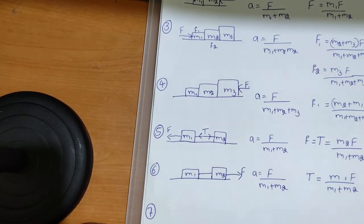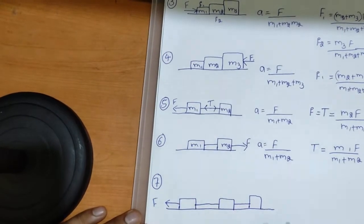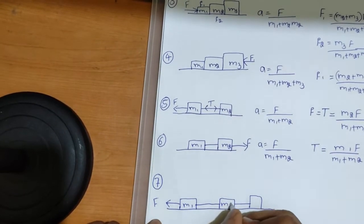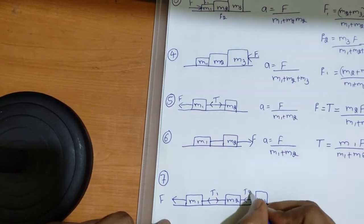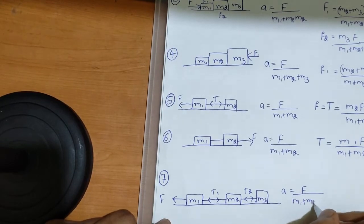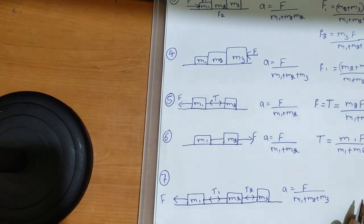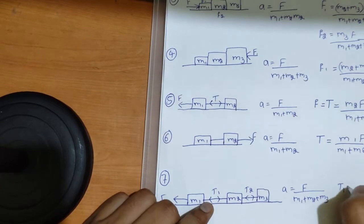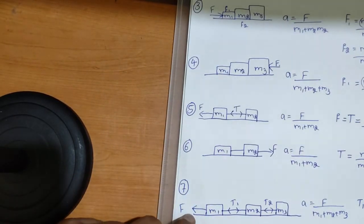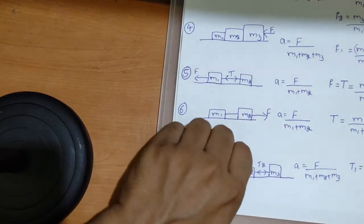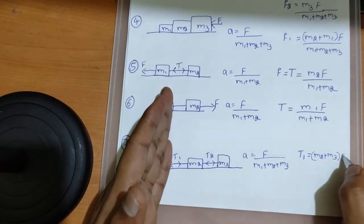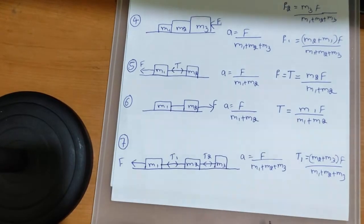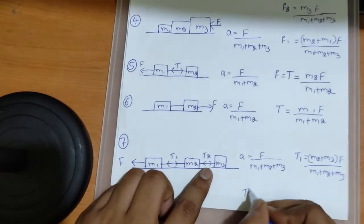Now I'll extend this to a three-block system connected by strings. I'm pulling the m1 block with force F; between m1 and m2 there is tension t1, and between m2 and m3 there is tension t2. Acceleration is the same: F by m1 plus m2 plus m3. For tension t1: the force is directly acting on m1, so forget m1. What is remaining is m2 plus m3. So t1 equals (m2 plus m3) times F by m1 plus m2 plus m3.